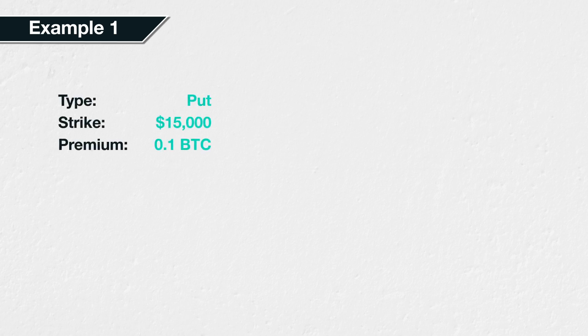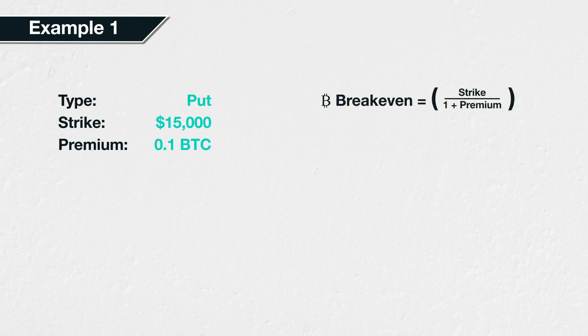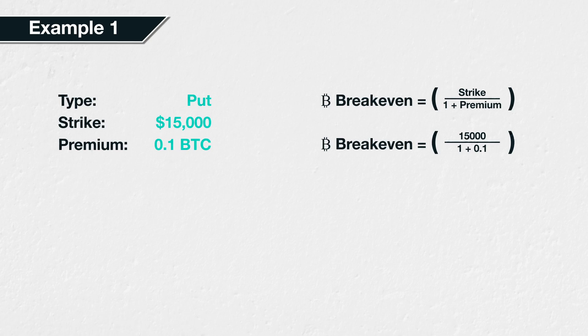Example 1. Let's first use the option from example 1 in the previous lecture. This was a bitcoin put option with a strike price of $15,000 and a premium of 0.1 BTC. The break-even is calculated as the strike price divided by 1 plus the premium, which in this case is 15,000 divided by 1 plus 0.1. This gives us a break-even of $13,636.36, meaning the trade will have broken even at that price, leaving your bitcoin balance the same as it was before the trade.